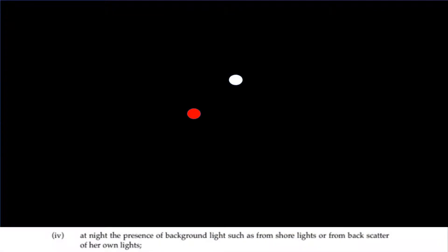On to the fourth thing: at night, the presence of background light, such as from shore lights or from backscatter of her own lights. Here, on a clear night, we can see very easily the masthead light and the port side aspect light of a power-driven vessel.